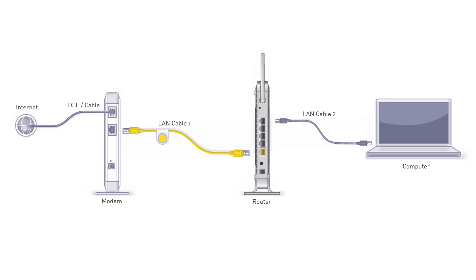Step 3: Connect another LAN cable, which should be sold separately, to the output LAN port of the Netgear router and input the same network cable to the computer. Step 4: Finally, connect the power adapter to the modem and Netgear router to browse the internet.